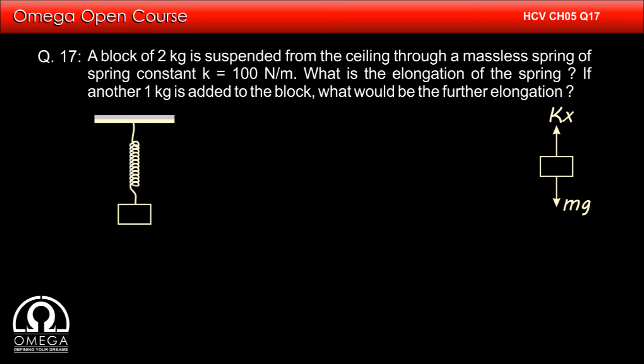Let us first draw the free body diagram of the block. A gravitational force of mg pulls the block downward. A spring force of kx will pull it upward. Since the block is at rest, net force on it must be zero.